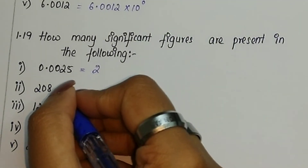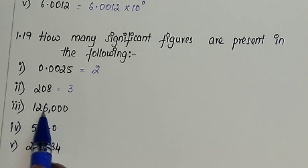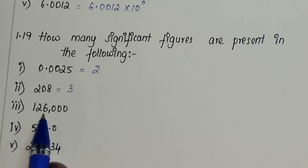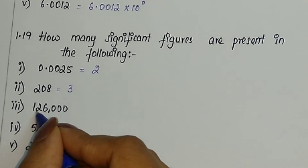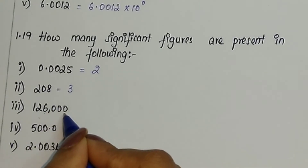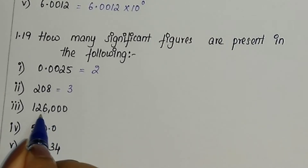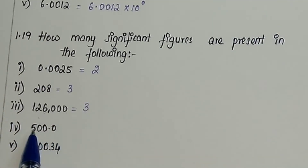The second number therefore has 3 significant figures. The next one is 126000. Here there is no decimal at all, so only the non-zero digits are significant — the trailing zeros without a decimal are neglected. If there were a decimal after the zeros, those zeros would also be significant, but since there is no decimal, we have only 3 significant figures.